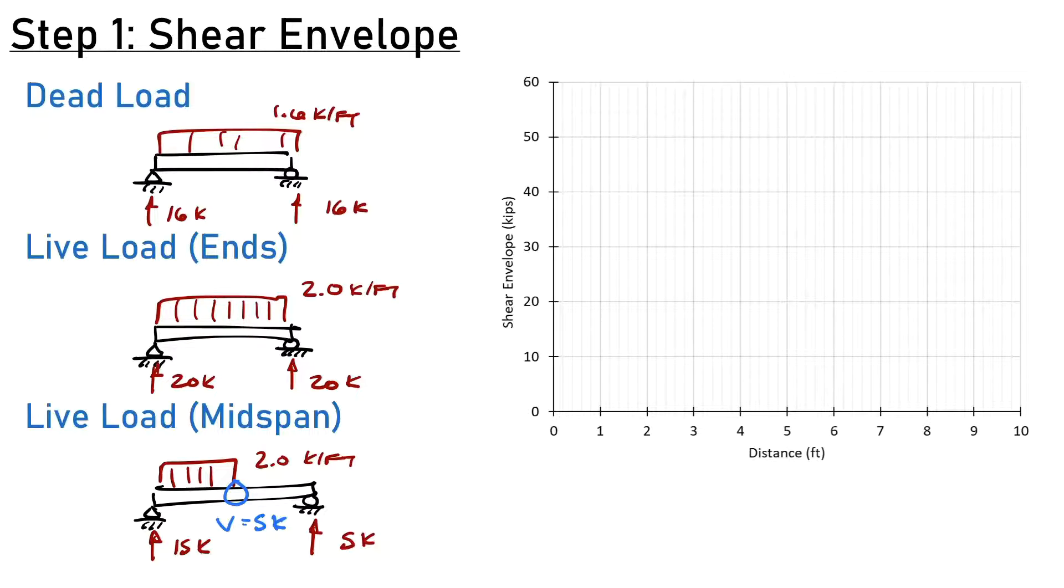Looking at the worst case shear at the ends with factored loads: 1.2 times dead is 16 kips plus 1.6 times live which is 20 kips, giving 51.6 kips of shear at the ends. At mid span, we have 1.2 times dead with zero shear, plus 1.6 times 5 kips from live load, giving 8 kips at that location. To draw my shear envelope, I connect those two points with a straight line.